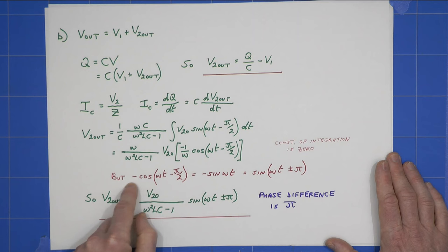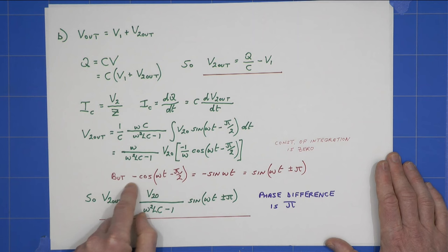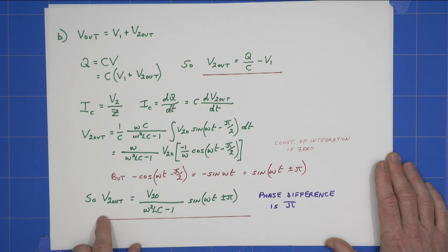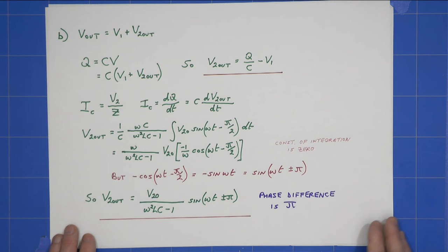A little bit of trigonometry here shows that that equals that. So I can then rearrange this to give us the final expression here of V2out, and the phase difference is pi. In other words, 180 degrees, and it can be plus or minus pi. It's the same thing. So that's the expression for V2out.